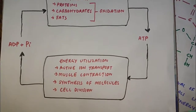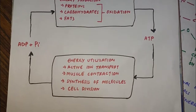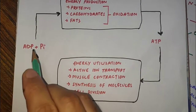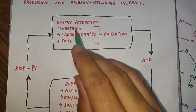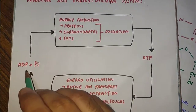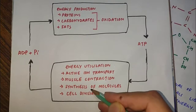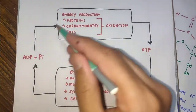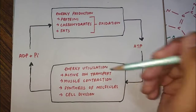ATP is utilized in active ion transport, muscle contraction, synthesis of molecules, cell division or cell growth, and other physiological functions. When ATP is utilized, we have ADP — adenosine diphosphate. ADP will get inorganic phosphate, and there will be energy production from oxidation of proteins, carbohydrates, and fats. The energy produced here will be used to convert ADP back into ATP, and this cycle will continue.